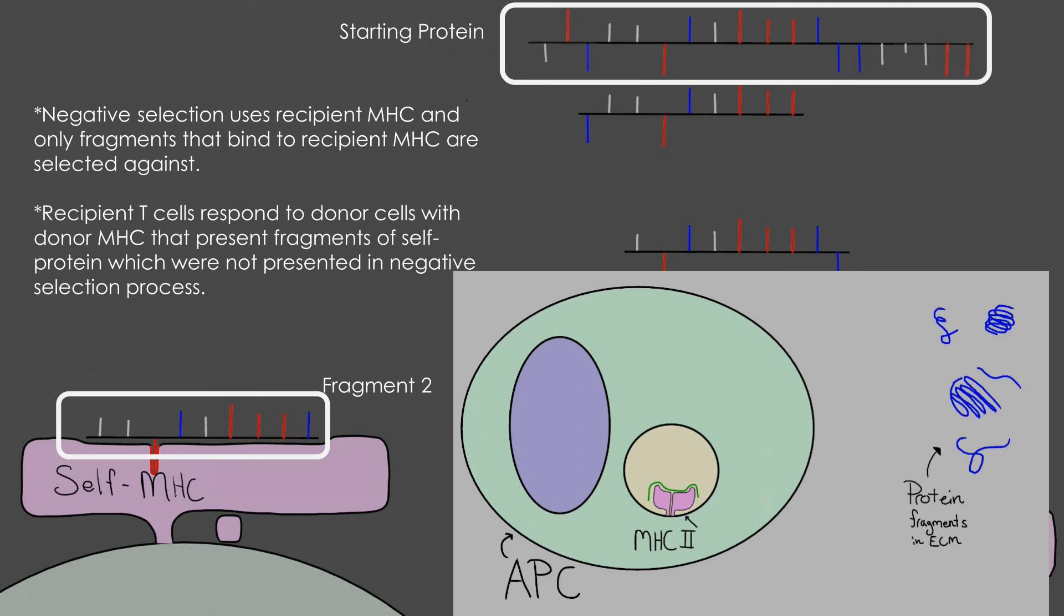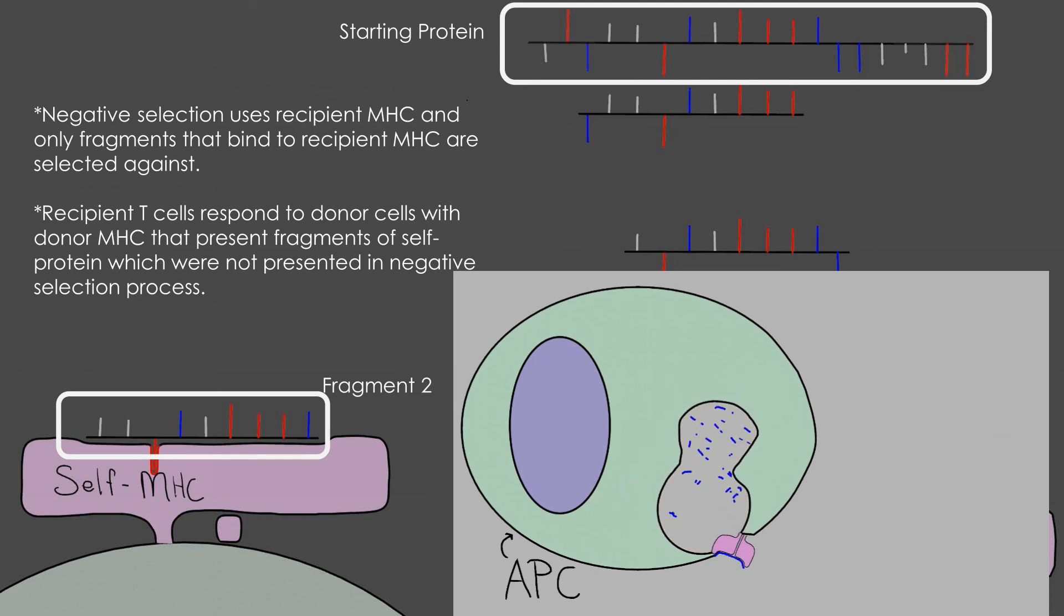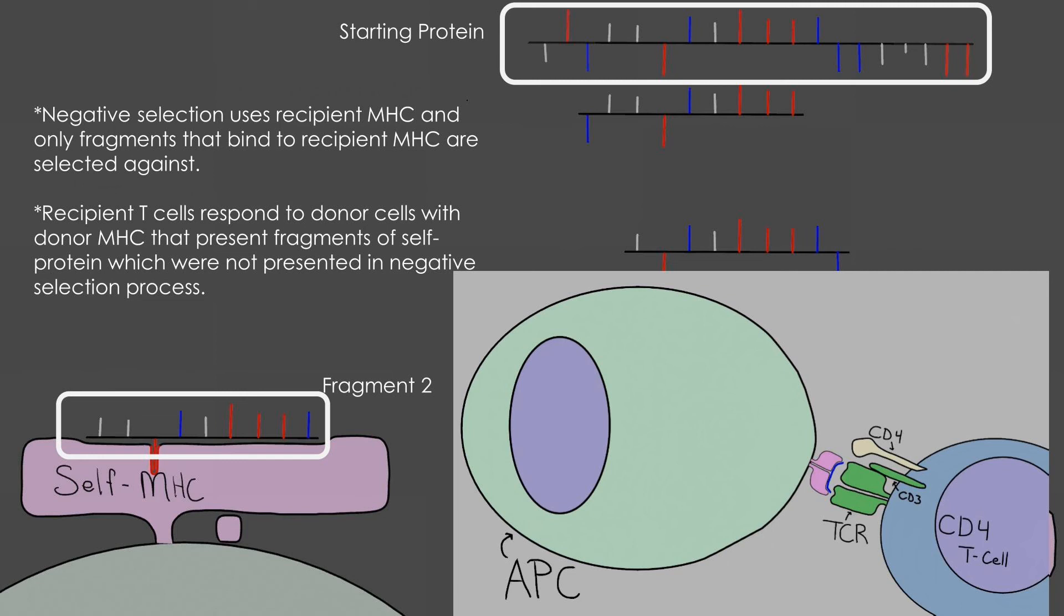CD4 T cells and MHC class II also participate in acute transplant rejection in much the same way. The only difference is that the MHC class II is presenting proteins from the extracellular space rather than the intracellular space. Peptides are broken down in the lysosome and loaded onto MHC class II molecules. If the MHC class II of the donor is different from the MHC class II of the recipient, the fragments of peptides will be different and there will be no negative selection against these fragments, so CD4 T cells will react and initiate inflammation and damage to the site.